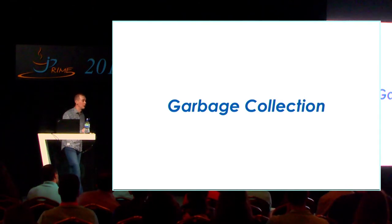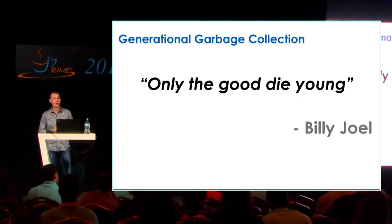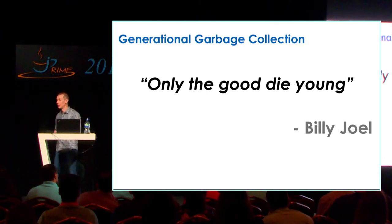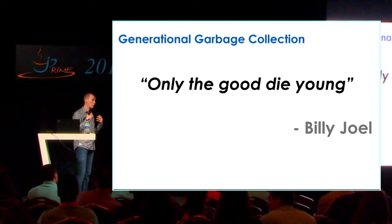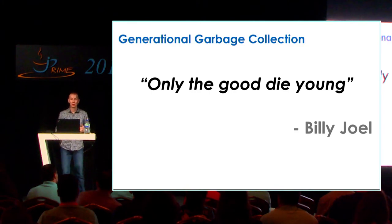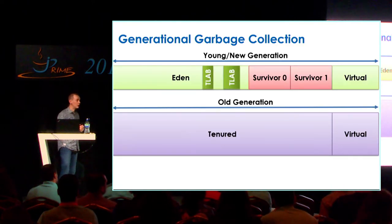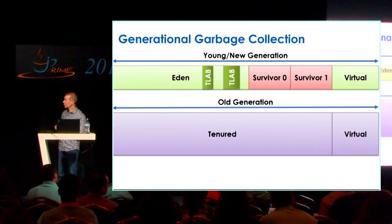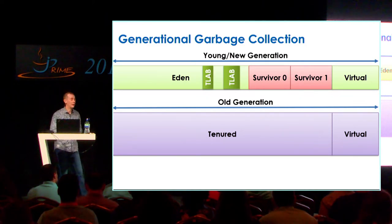Garbage collection — the big elephant in the room people always worry about for low latency. A key point: only the good die young. To get the best out of your garbage collector, make sure your objects live for the shortest possible time. This plays into the weak generational hypothesis — things are garbage collected sooner and cheaper if they don't live long. Generational garbage collectors do more work depending on how long an object lives, organizing into young generation and old generation.